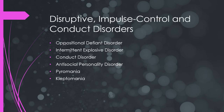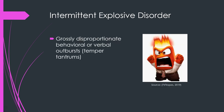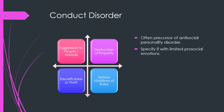Disruptive impulse control and conduct disorders include several conditions. Oppositional defiant disorder involves being angry or irritable, vindictive, and argumentative or defiant. Intermittent explosive disorder is where behavior is grossly disproportionate to the stressor — verbal or behavioral outbursts that are out of proportion. Conduct disorder is important to know because it can sometimes turn into antisocial personality disorder; it's associated with aggression toward people or animals, destruction of property, serious violation of rules, and deceitfulness or theft. You can also specify if the individual has limited pro-social emotions like empathy.